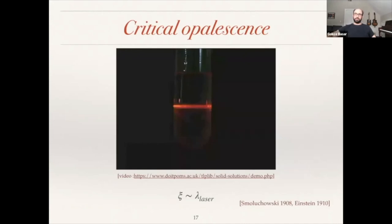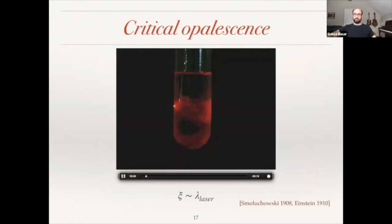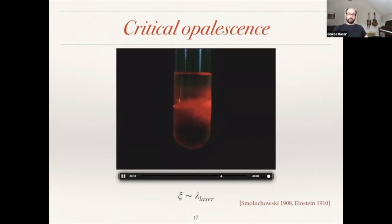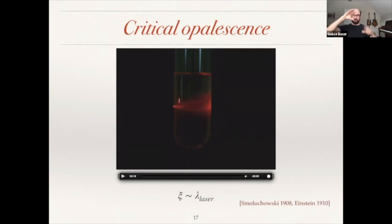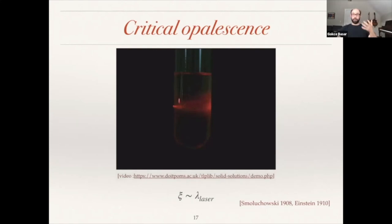This is what happens in the famous phenomenon of critical opalescence. A liquid that is otherwise transparent away from the critical point becomes cloudy. Here is an experiment — as you approach the critical point with a laser beam, you can see this cloudiness happening, and then moving away from the critical point again. This happens because the fluctuations of the density become enhanced — they increase by several orders of magnitude and the size of the density fluctuations becomes comparable to the wavelength of the laser. Therefore, the laser scatters way more frequently than it does away from the critical point. The hallmark signature of a critical point is enhanced fluctuations.